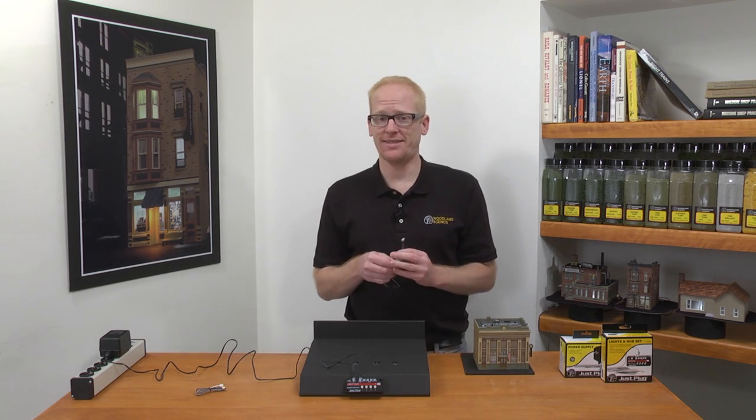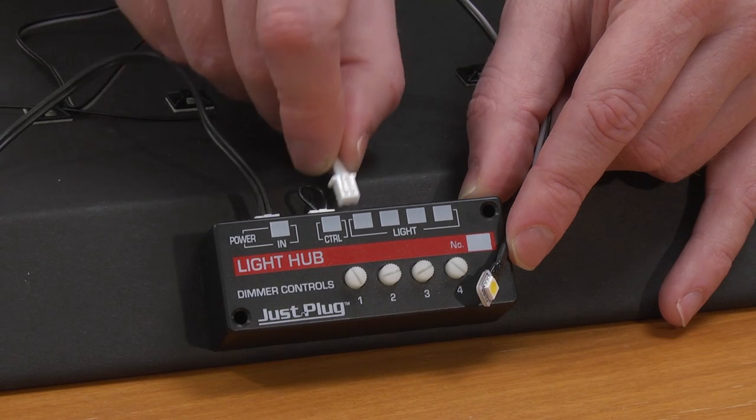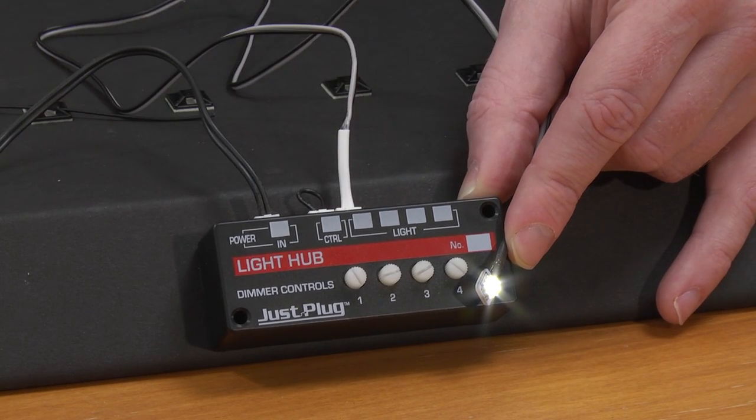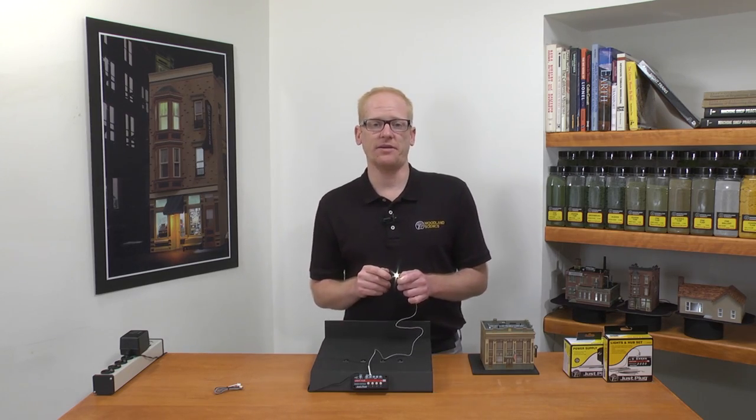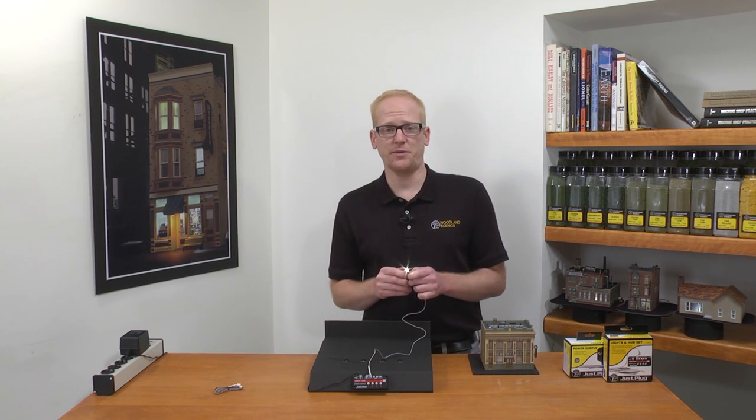Now take the LED stick on lights and plug the light into one of the four light ports. The lights are designed to stick to any clean surface on your layout. You could attach it to the inside of a building or to any base like I will do here.